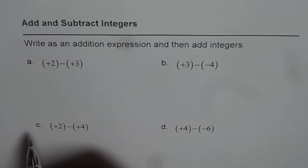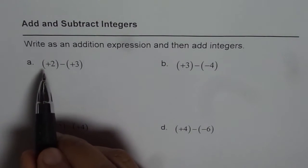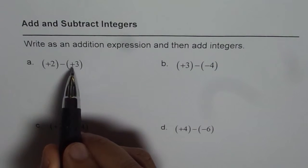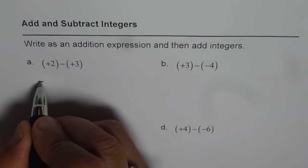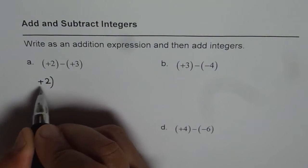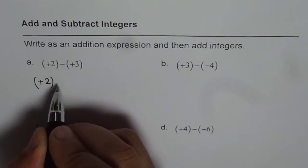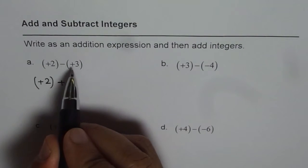So, we have (+2)-(+3). So, I can write this as (+2). Instead of minus, I want to write plus. So, when I do reverse, I have to reverse the other sign also.